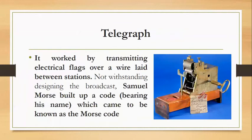After the first daily newspaper, our communication evolved to the telegraph. It worked by transmitting electrical signals over wire and lead between stations. Samuel Morse built up a code which came to be known as Morse code. The telegraph was created in the 1840s by Samuel Morse and other inventors.